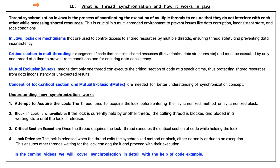What is Thread Synchronization and how it works in Java? Thread Synchronization in Java is the process of coordinating the execution of multiple threads to ensure that they do not interfere with each other while accessing shared resources. This is crucial in a multi-threaded environment to prevent issues like data corruption, inconsistent state, and race conditions.